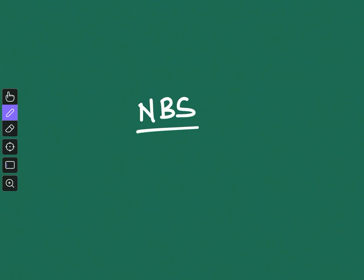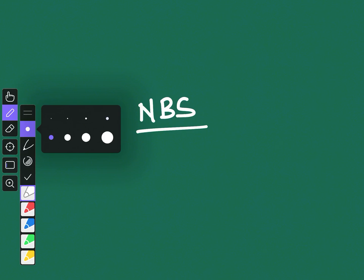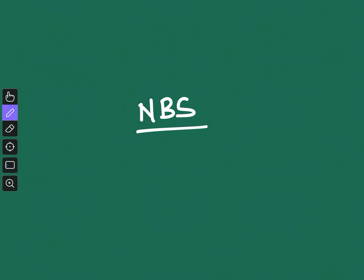Welcome to Chemistry Lover. This is the seventh video of the hundred important topics in organic chemistry. Today I am going to talk about a reagent called NBS, or N-bromosuccinimide. This is the structure — it is the amide of succinic acid with a bromine substituent.